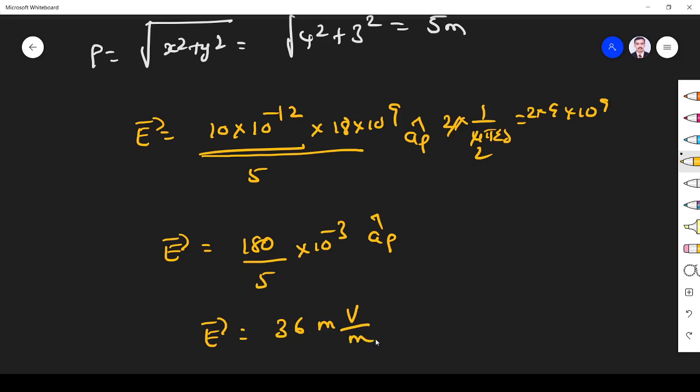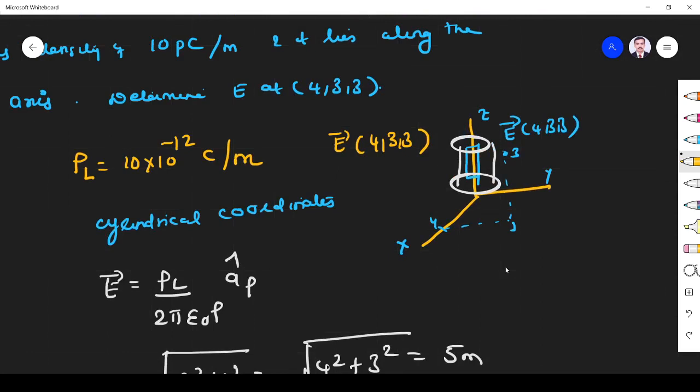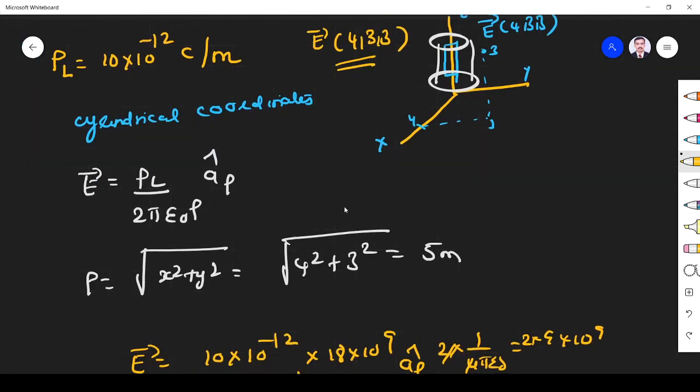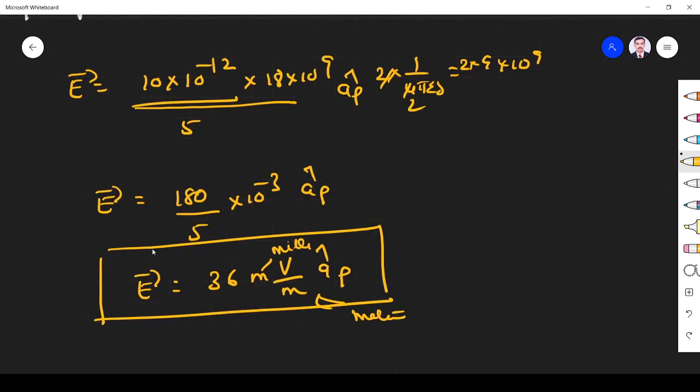They asked to find the electric field at x=4, y=3, z=3. We know that the electric field due to line charge is symmetric with respect to the z-axis. We got the answer as a constant value, varying only in the ρ direction. If you have any doubt, please refer to my video on electric field due to line charge. This is the answer. Thank you.